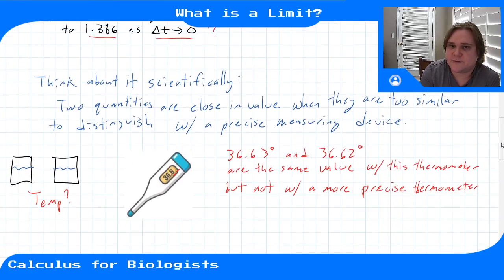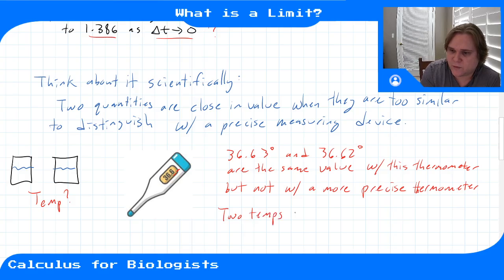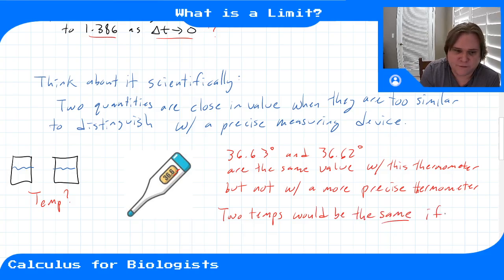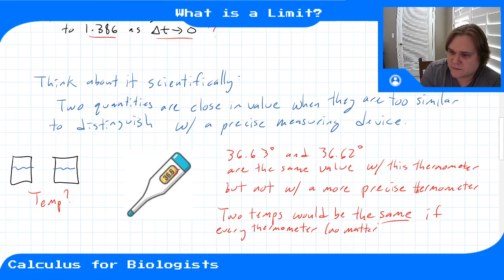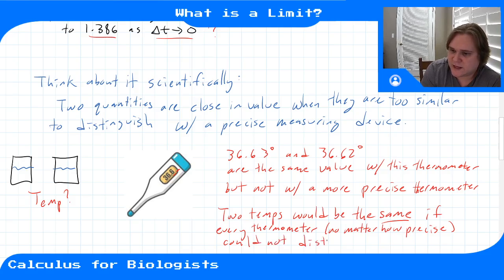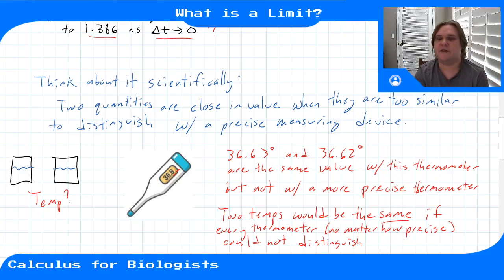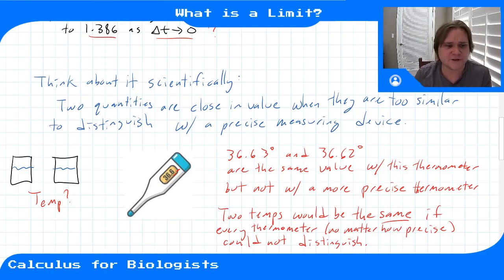Two quantities would be exactly the same if every thermometer in the world — no matter how precise — couldn't distinguish them. If I had a thermometer going to 50 decimal places and they were still the same up to that precision, I'd say they're the same temperature. We're going to use this idea with the limit.